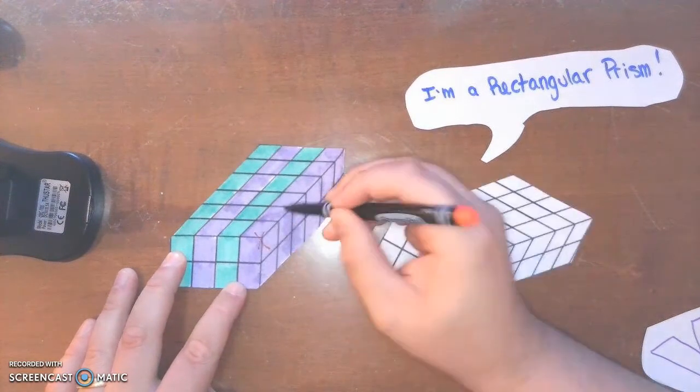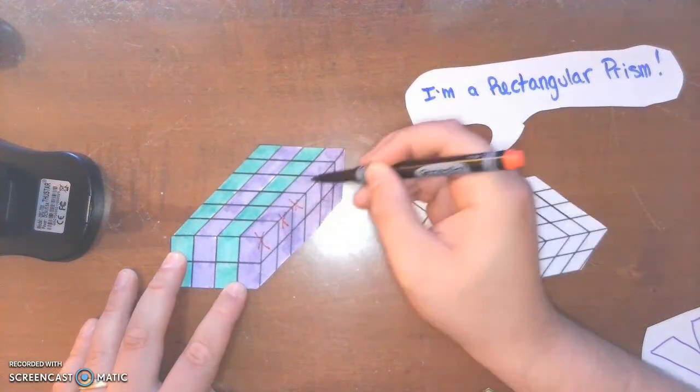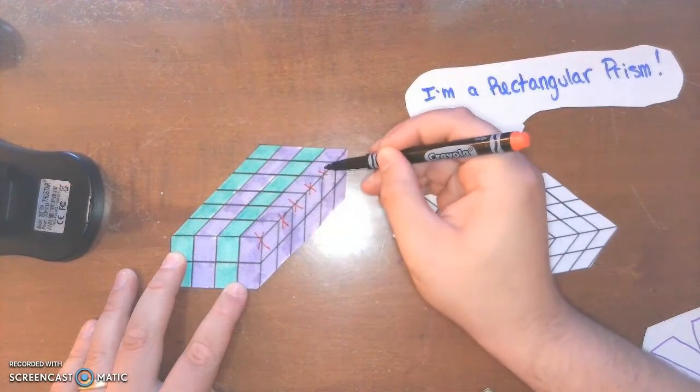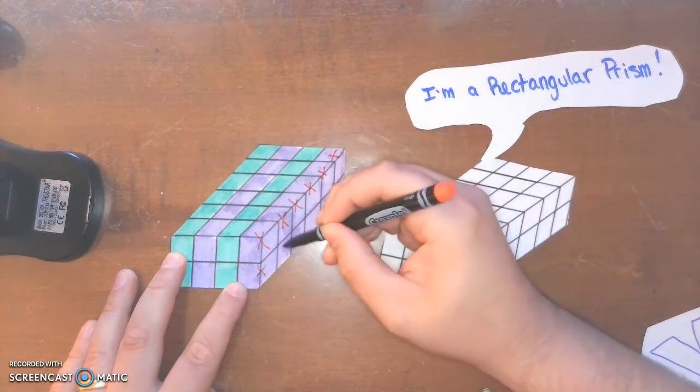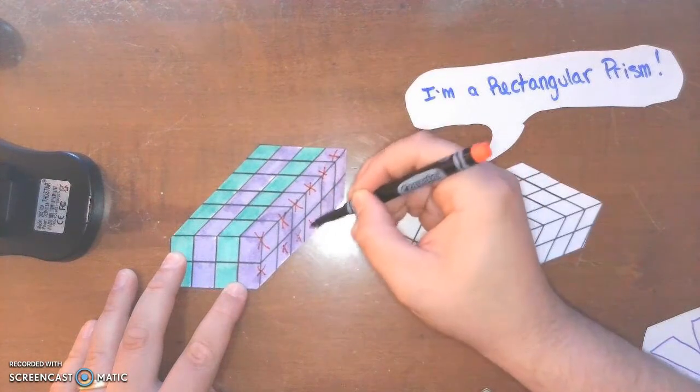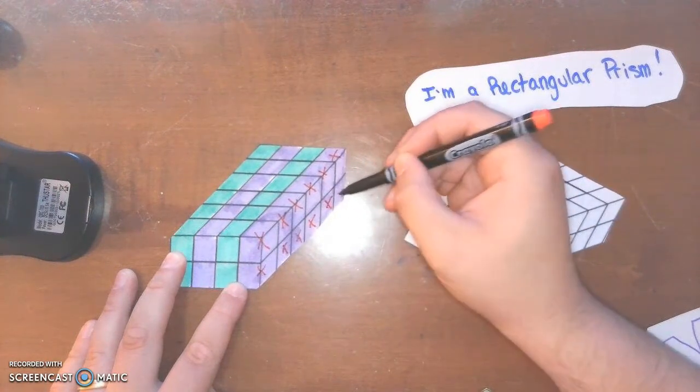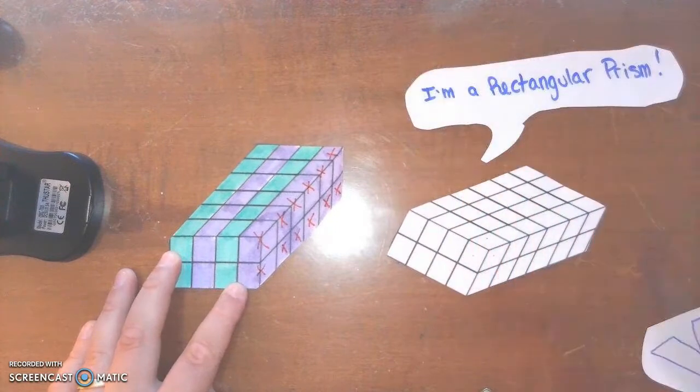So there's one, two, three, four, five, six, seven, eight, nine, ten, eleven, twelve cubes there.